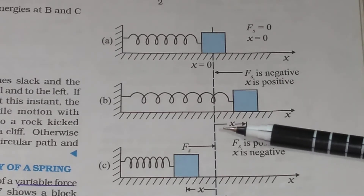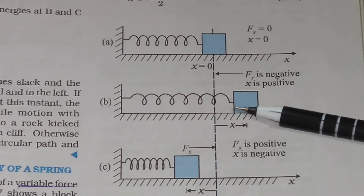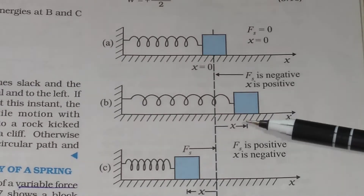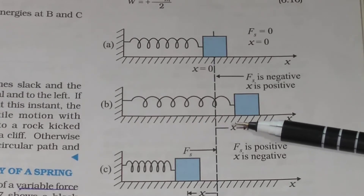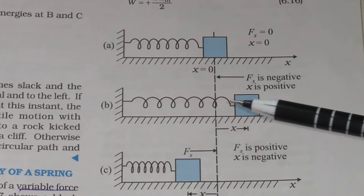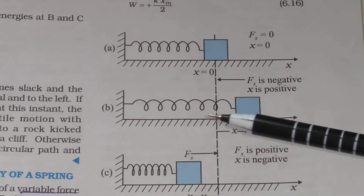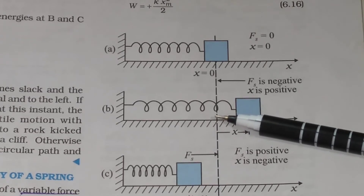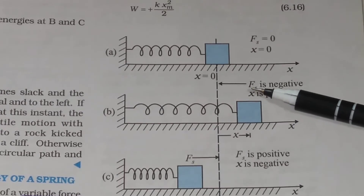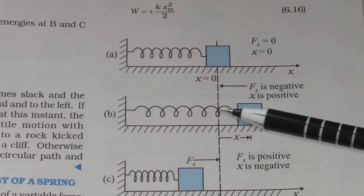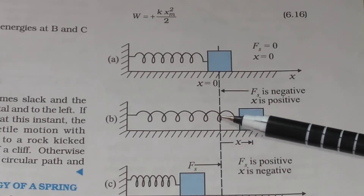When x is greater than 0, that is displacement is positive — if you displace the block to this side, then x is positive and the spring is in a stretched (stressed) condition. In this stressed condition, the spring force fx will act in the negative direction, so fx is negative.